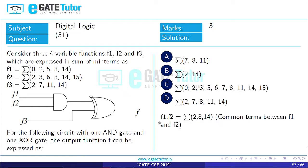So 2, 8, 14 are the common terms. F1 dot F2 is summation of 2, 8, 14.